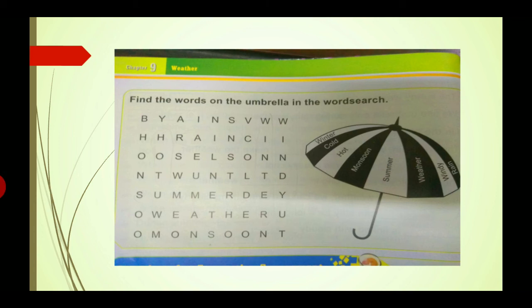Students, this is another activity: find out words on the umbrella in the word search. This activity is included in your book on page number 70. In the umbrella there are some words written: first word is Winter, second word is Cold, third word is Hot, fourth word is Monsoon, fifth word is Summer, sixth word is Weather, seventh word is Windy, eighth word is Rain. We have eight words.